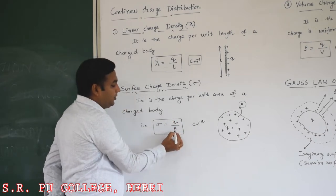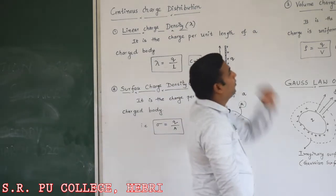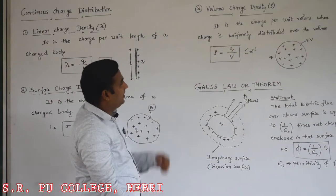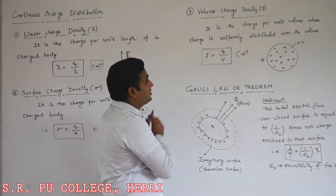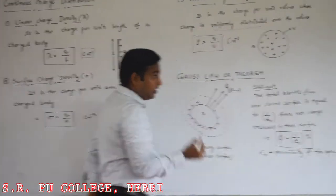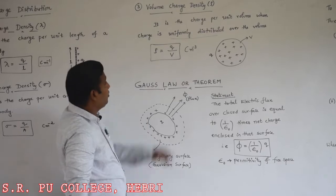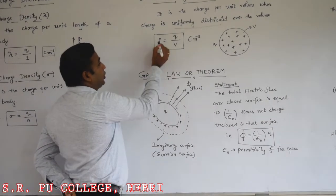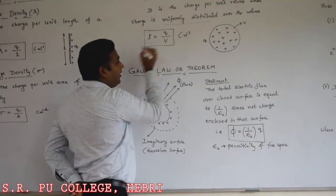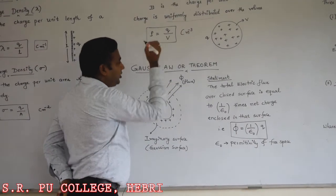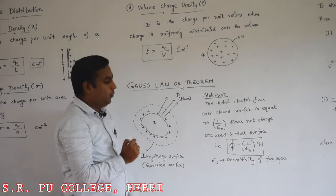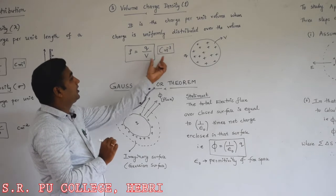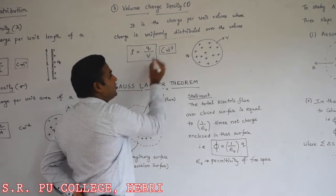The third important part is volume charge density, denoted by the letter rho. It is defined as charge per unit volume when the charge is uniformly distributed over the volume. Mathematically, we can write rho equals Q divided by V, where Q indicates the total charge and V indicates the volume. The unit for volume charge density is coulomb per meter cube.